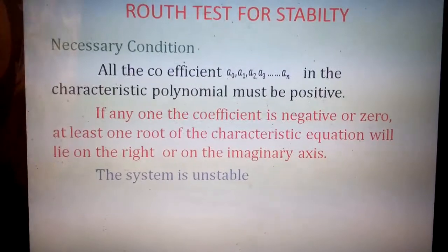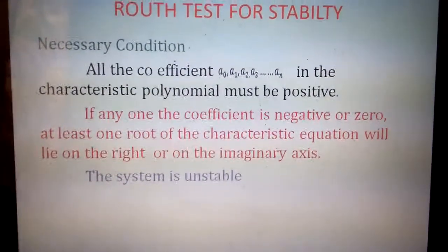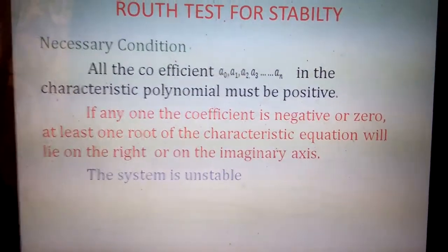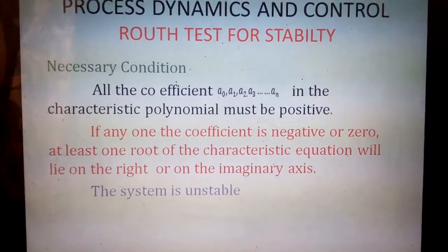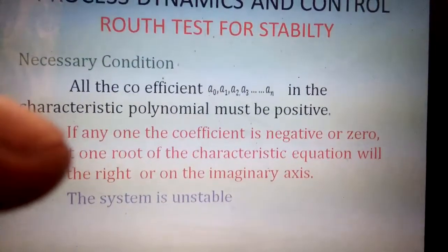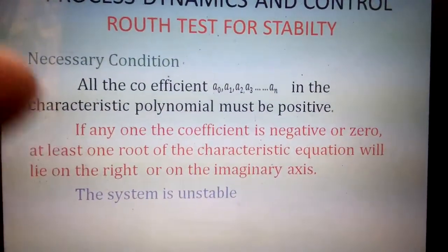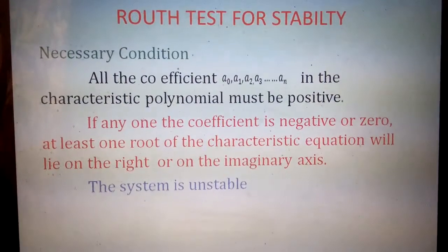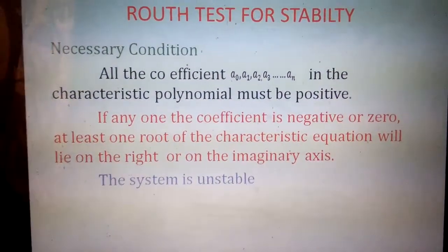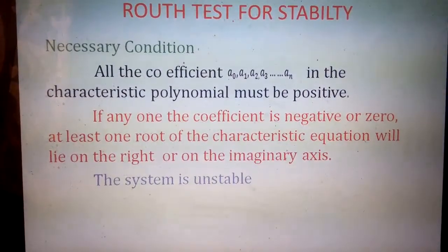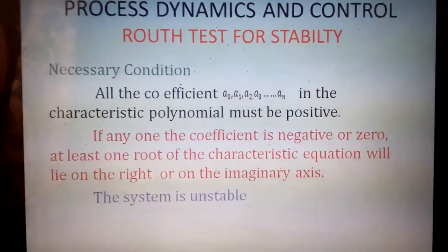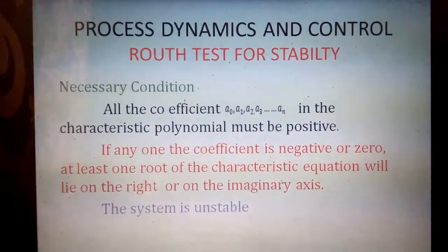What is the necessary condition? The necessary condition states that all the coefficients a0, a1, a2, a3, ..., an in the characteristic polynomial must be positive. If the coefficients are positive, the system may be stable or may not be stable, and we have to go for the sufficient condition. If any one of the coefficients is negative, then definitely the system is unstable — no need to go for further analysis.